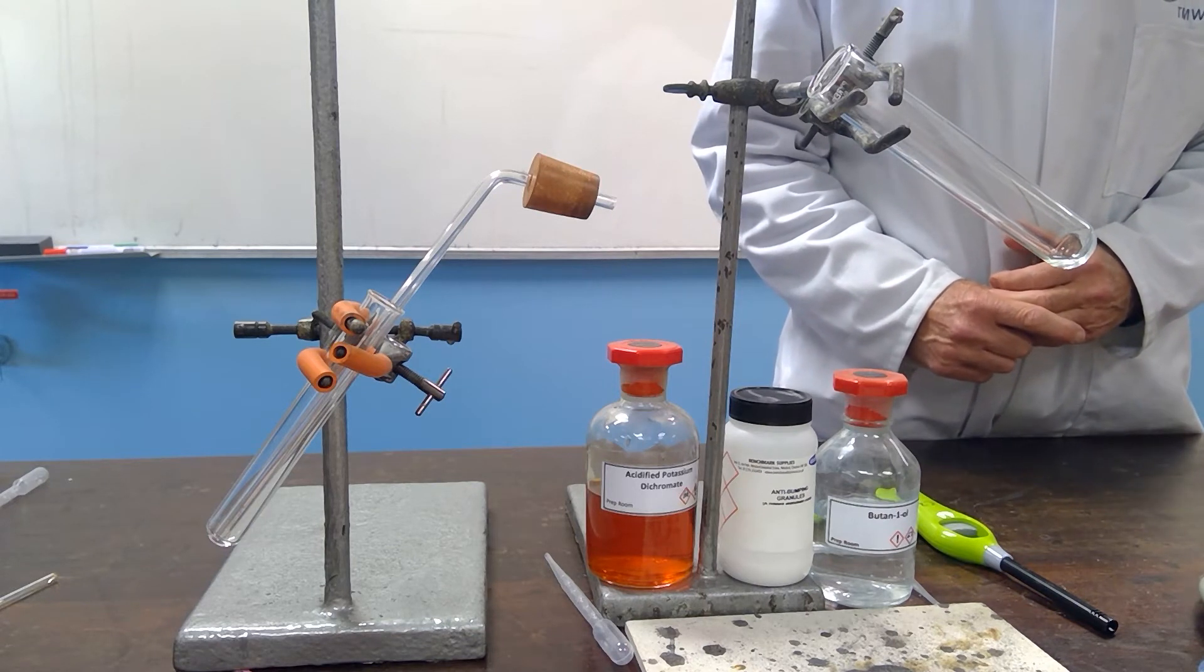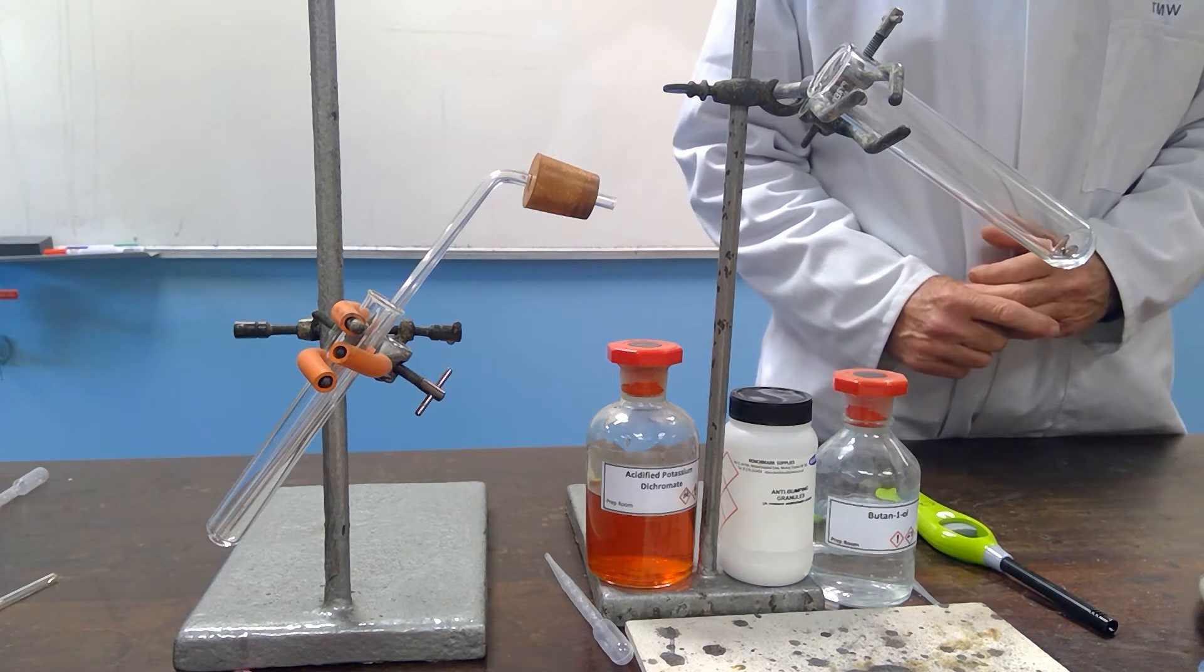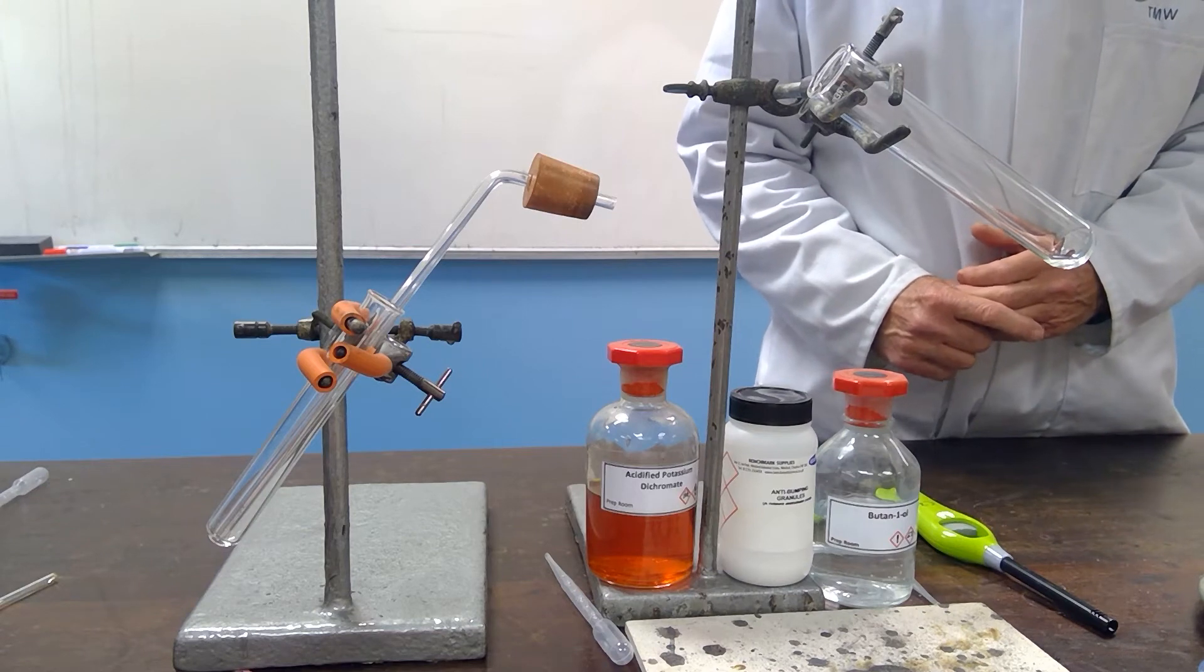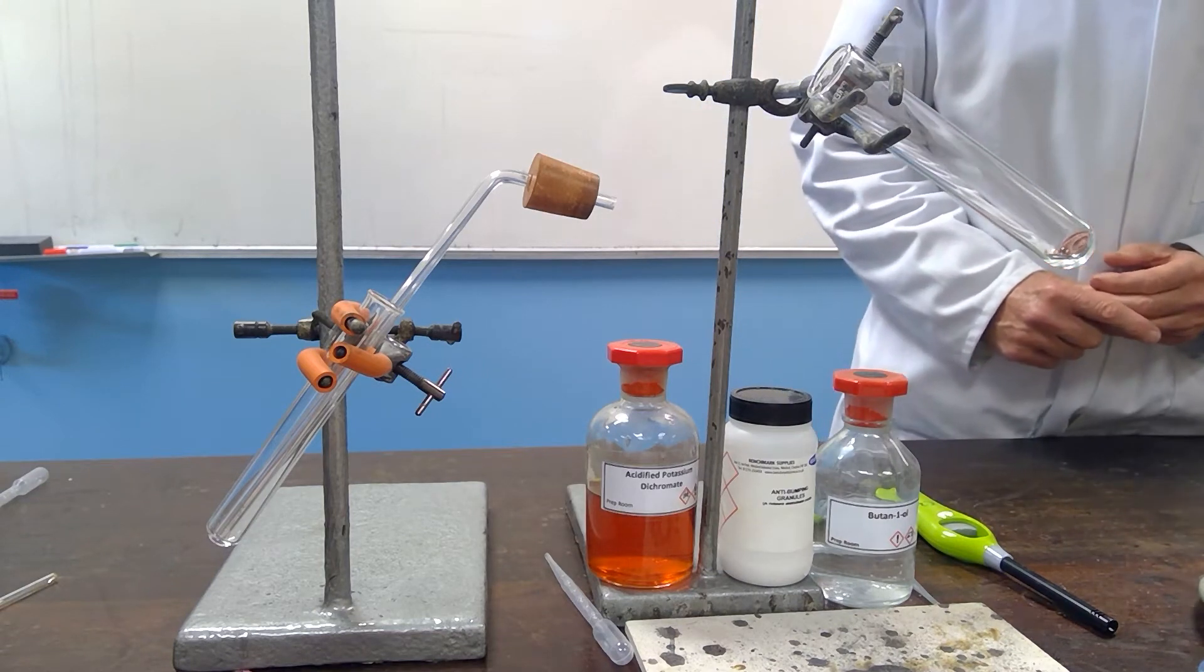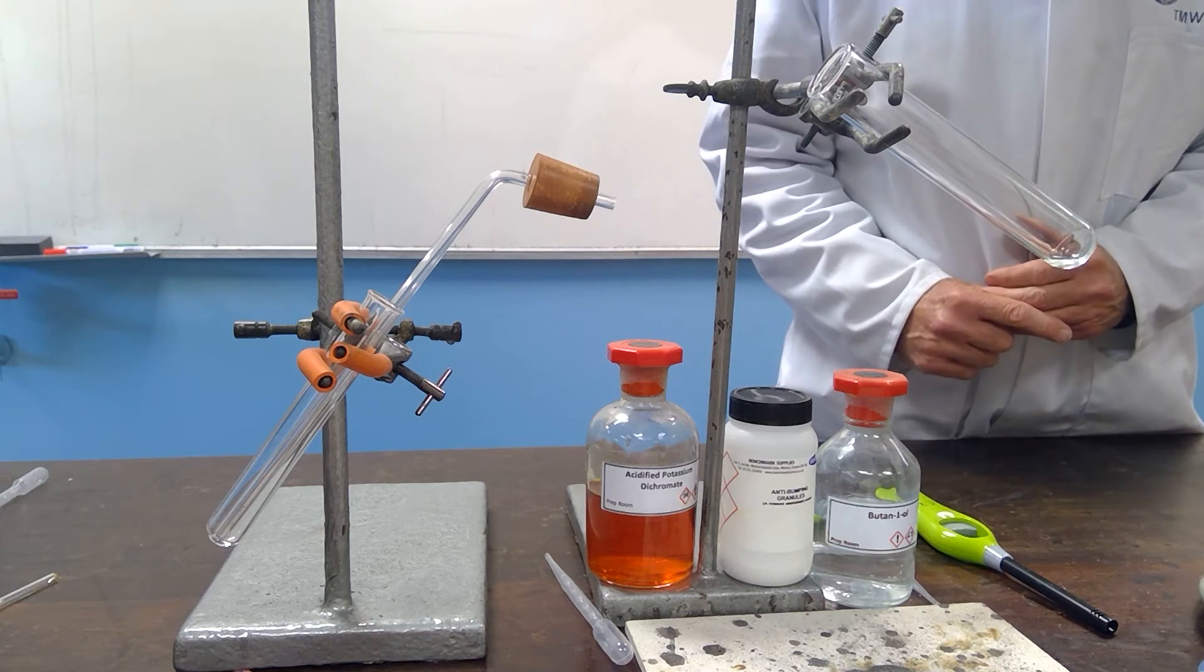In order to do the second test, you need to distill the products that are formed as a result of the reaction between the acidified potassium dichromate and the butan-1-ol and the butan-2-ol.